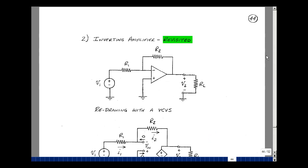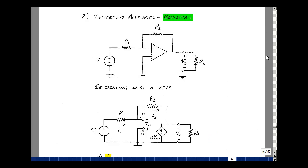Let's revisit the inverting amplifier. So as we had previously, we had our op-amp with a feedback resistor R2, an input resistor R1, and our voltage source V1, and a load R sub L.